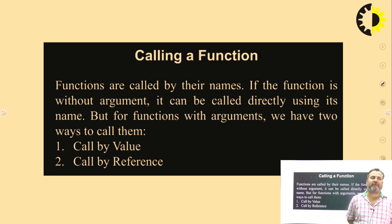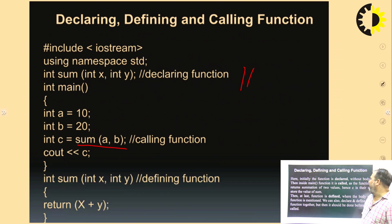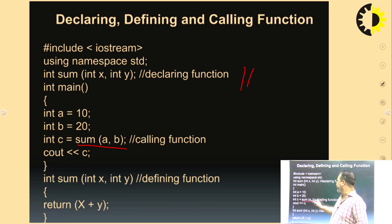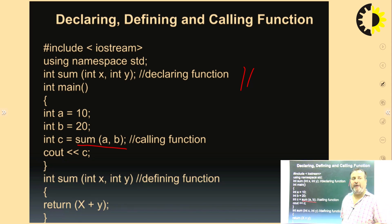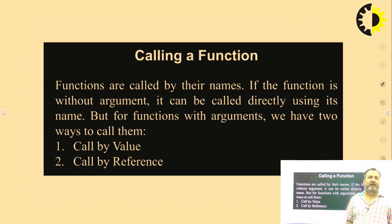Calling a function can be of two types: one is called call by value, and the second one is called call by reference. A function could take arguments or it could not take arguments. If it is taking some argument, this argument could be a value or it could be an address, also sometimes called call by reference.